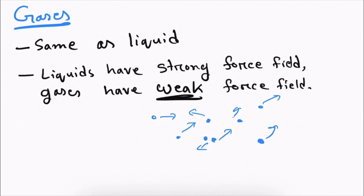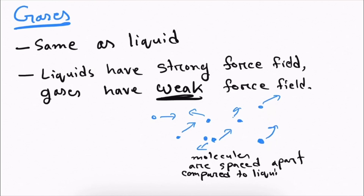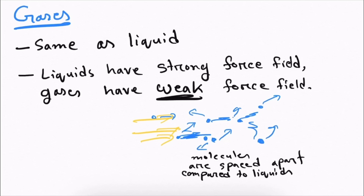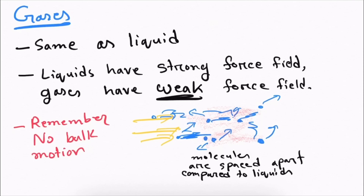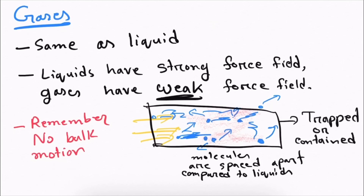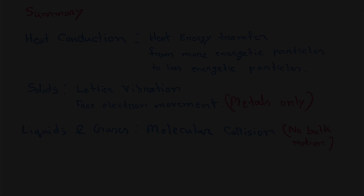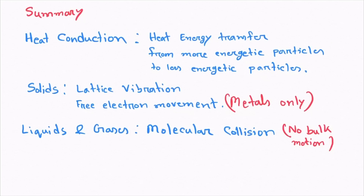Heat conduction in gases occurs just like heat conduction in liquids. Gas molecules are spaced further apart because of the weaker force field compared to liquids. When you give these molecules some heat, they are going to collide with each other and transfer the heat energy, so the entire gas conducts heat. Again, there cannot be any bulk motion — the gas has to be contained in a container for heat conduction to occur.